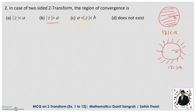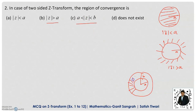Now, |Z| lies between A and B — for this we consider two concentric circles, one with radius A and one with radius B. The region between these two concentric circles is called the annular region. The region of convergence for the two-sided Z-transform is always an annular region, that is |Z| lies between A and B. So option C is the correct option here.